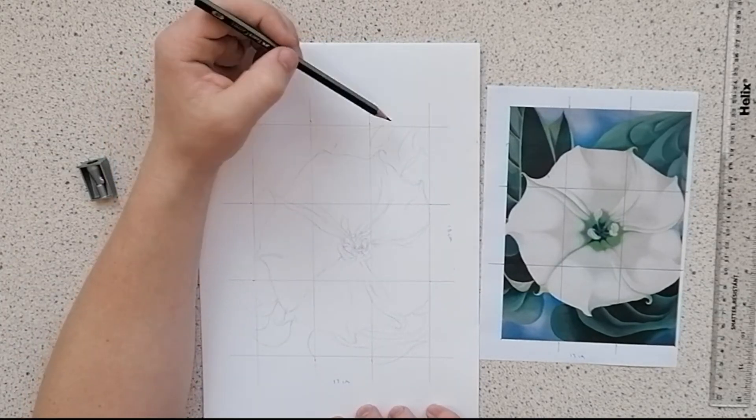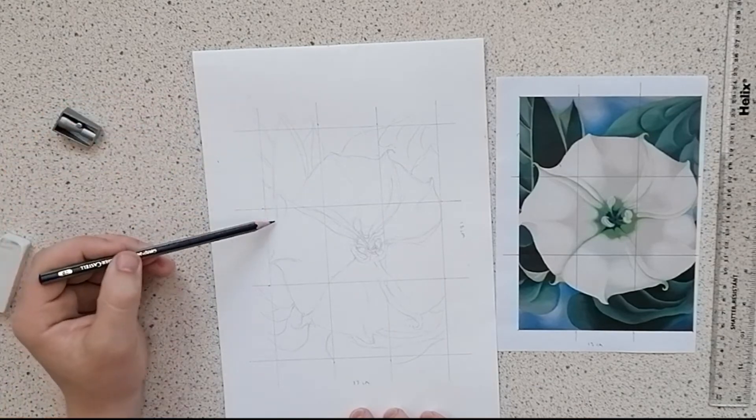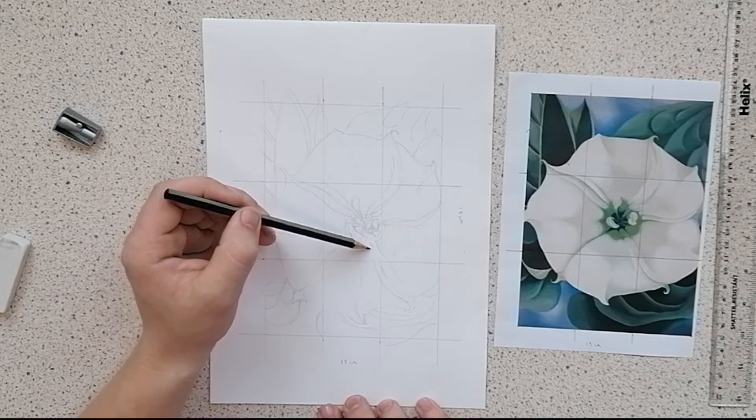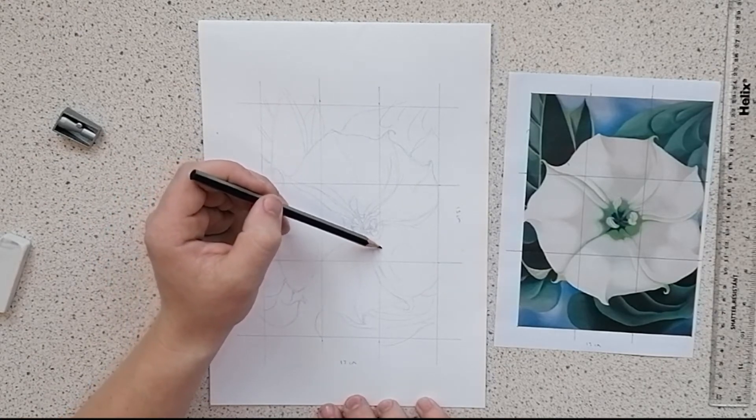And that's all there is to it really. Just keep going around every box one at a time, adding all those details in, starting with the foreground maybe and then go into the background. And just bear in mind we are going to be painting over this so don't press down too hard, so keep your pencil marks nice and light.